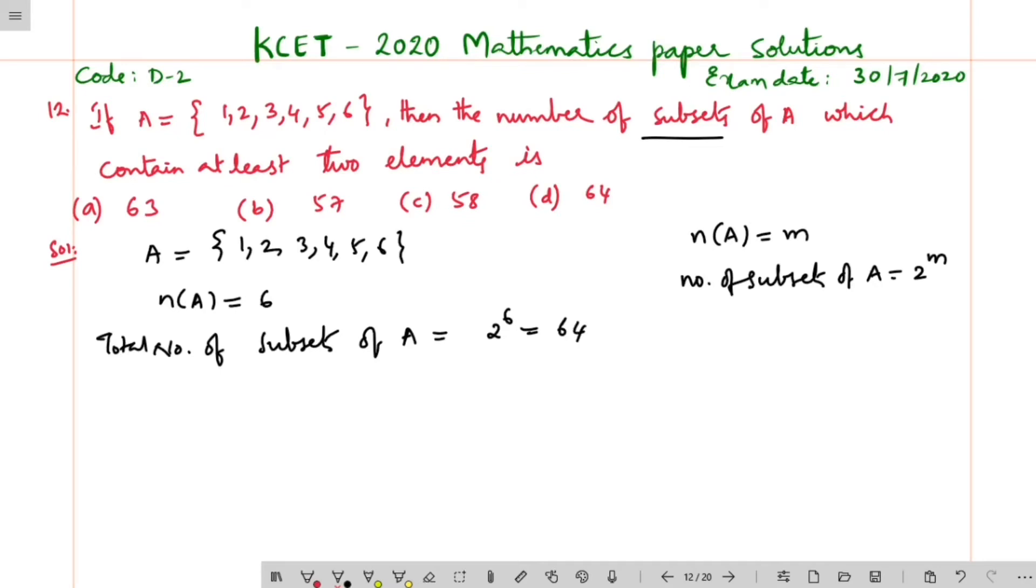Which means to say that minimum two elements will be there in each and every subset.